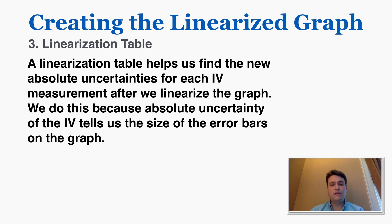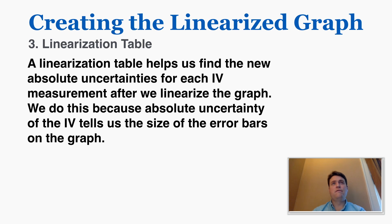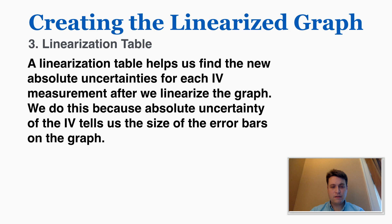This is section number three: the linearization table. This is something we use to make the process of finding the new linearized numbers and the new uncertainties easier. A linearization table helps us find the new absolute uncertainties for each IV measurement after we have linearized the graph. We care about these uncertainties because they tell us how big or small the error bars will be — the error bars show the size of the uncertainty. So we need to know what those new uncertainties will be after linearizing.